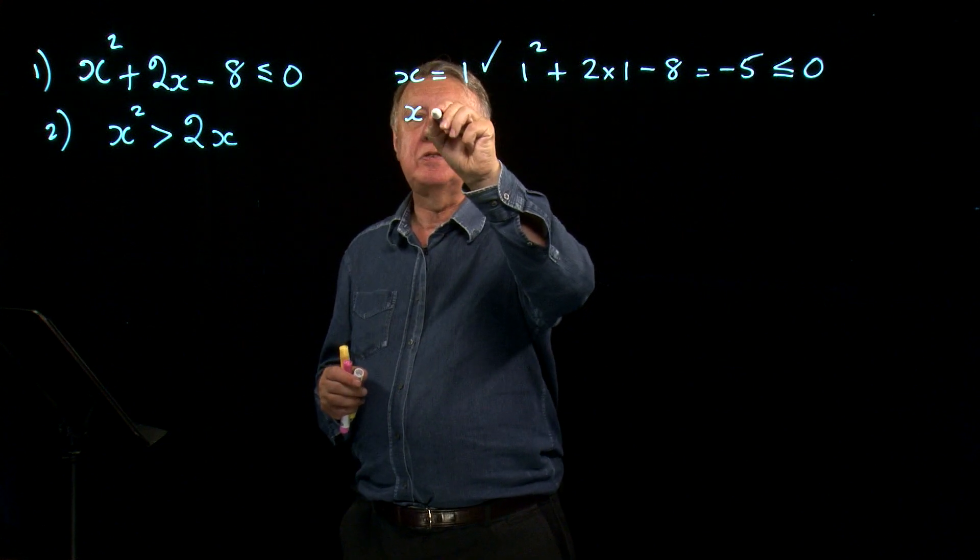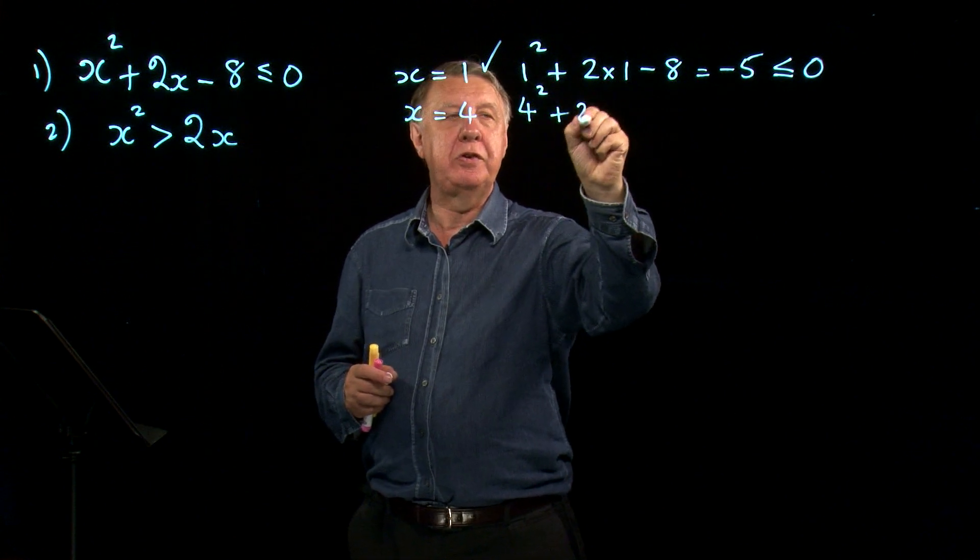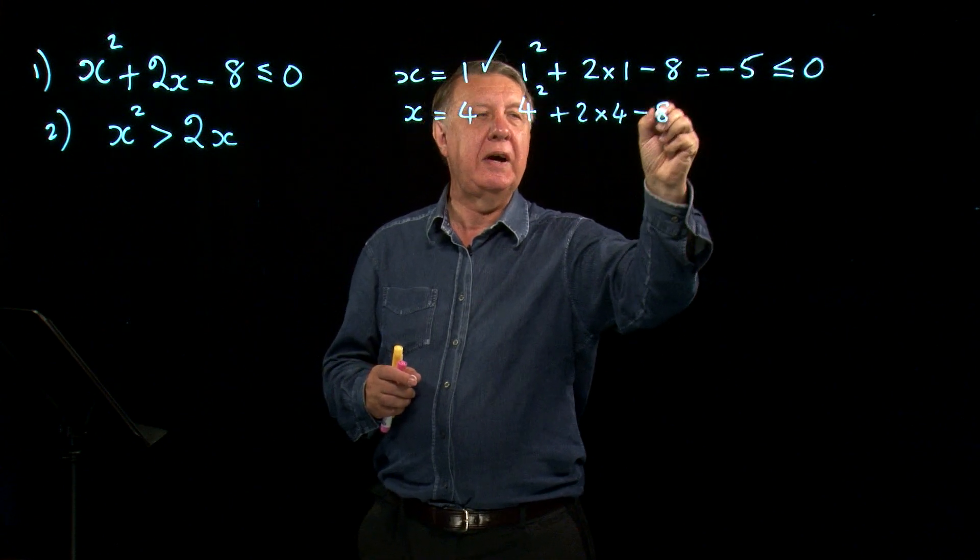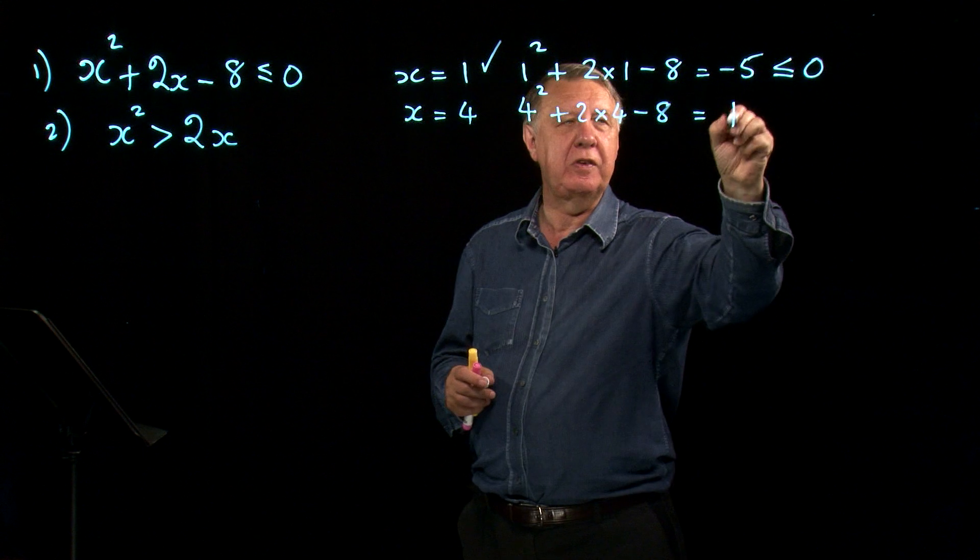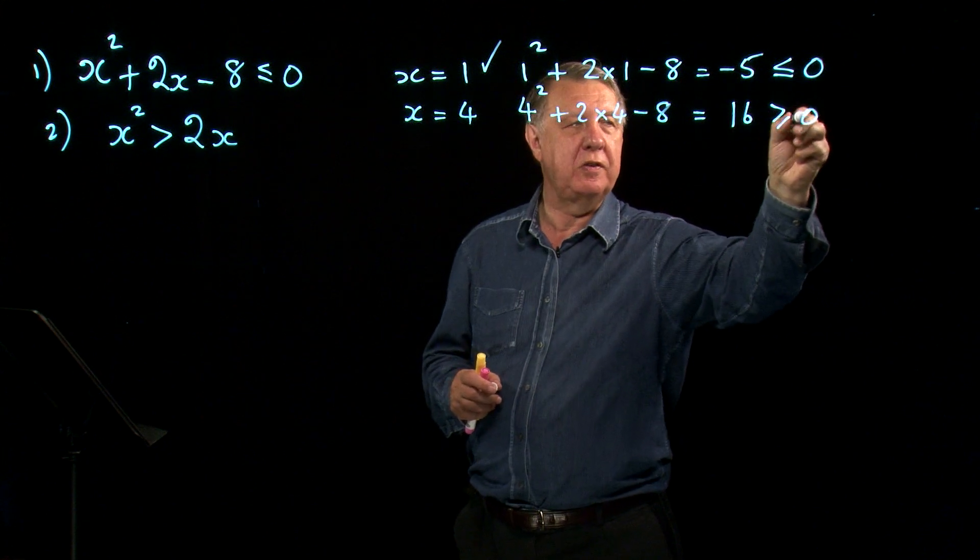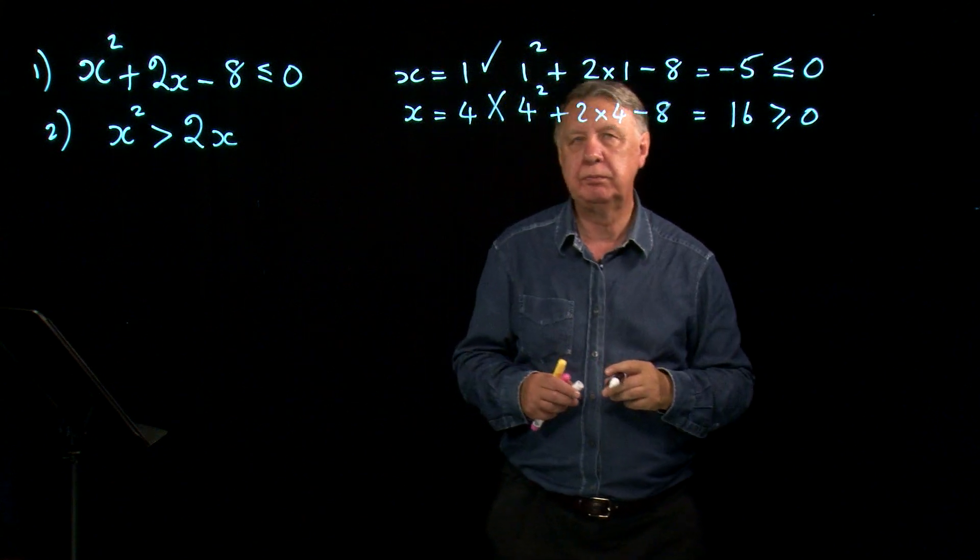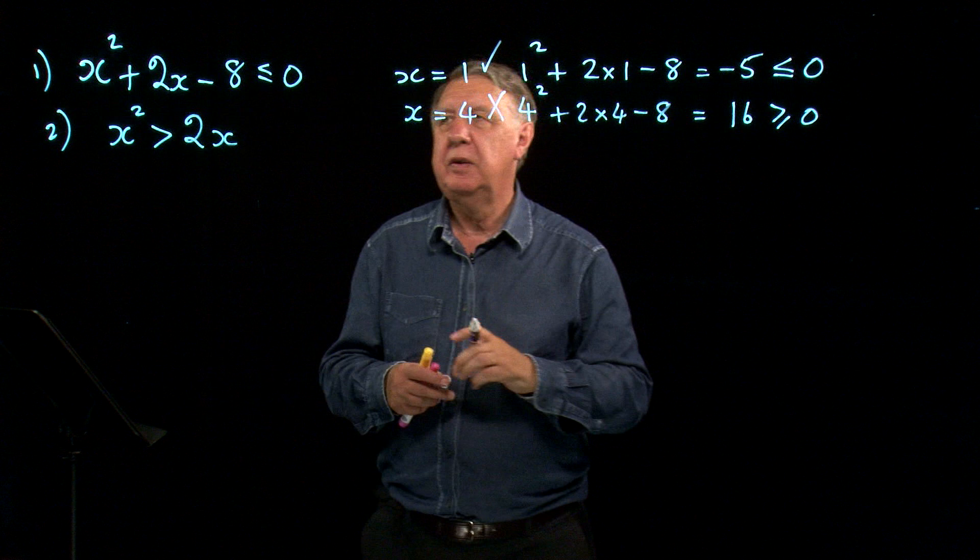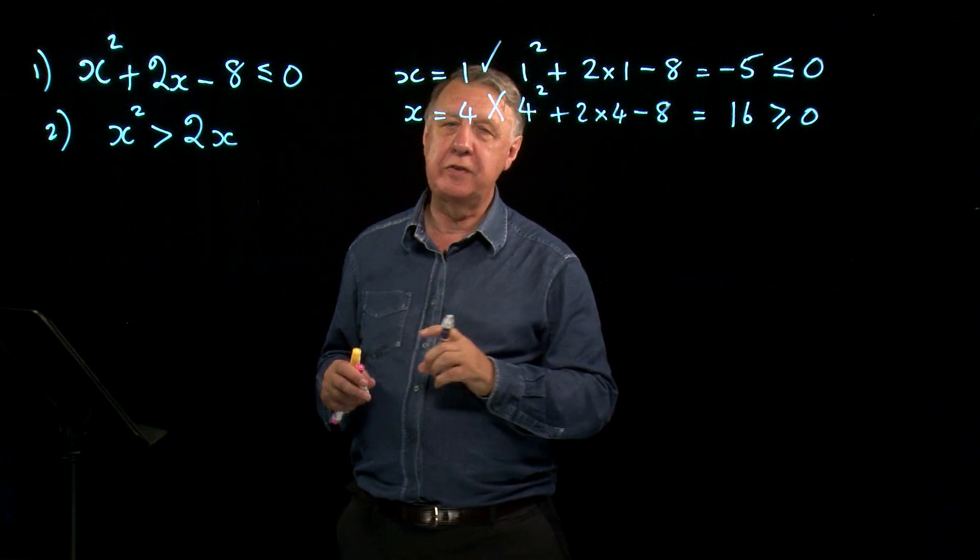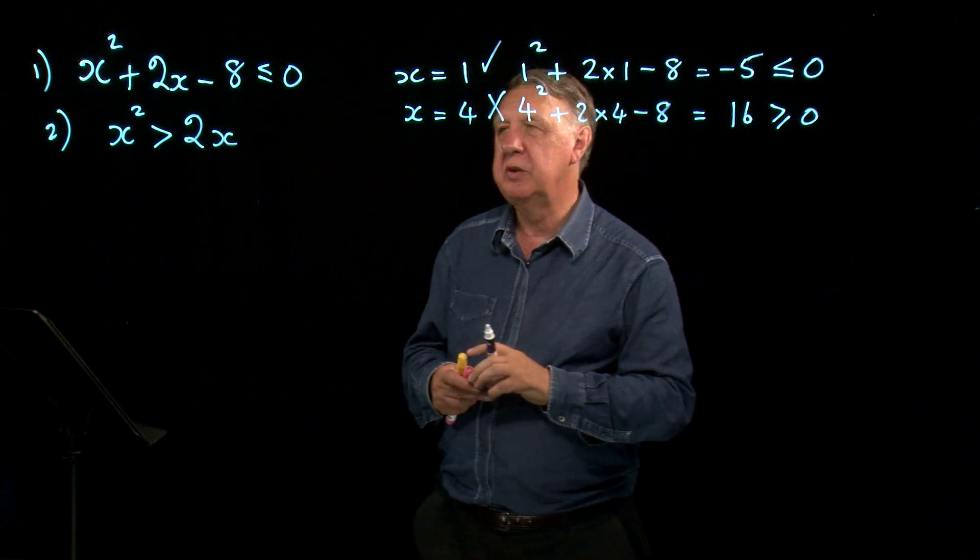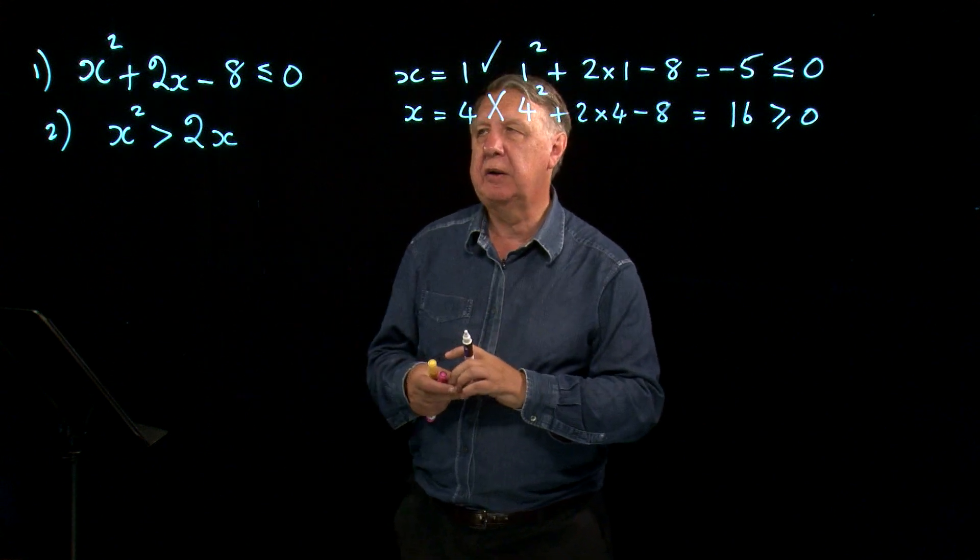If I tried 4, I would get 4 squared plus 2 times 4 take away 8, which is 16 plus 8 take away 8, which is 16, which is greater than or equal to 0. So this is not a solution. I could go on like this forever, finding values of x and checking whether they were or weren't less than or equal to 0. So that's obviously not a very good way of doing it.